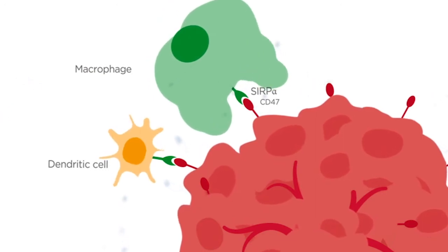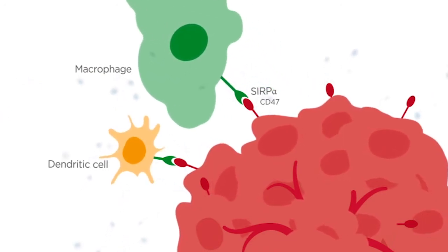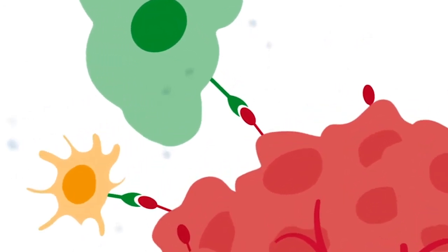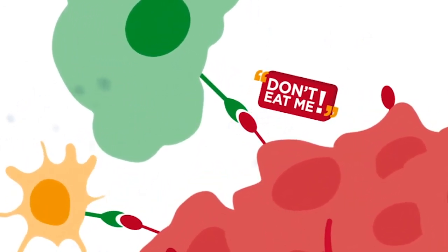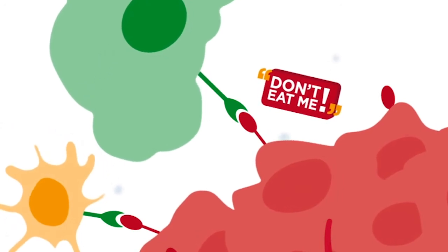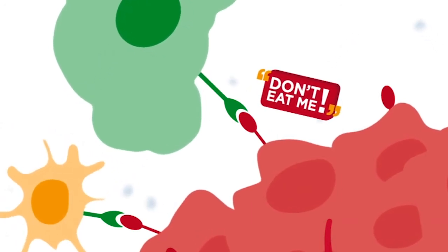sending inhibitory signals that reduce the ability of these cells to trigger anti-tumour immune responses and delivering a don't-eat-me signal to macrophages that reduces their ability to engulf and degrade tumour cells.